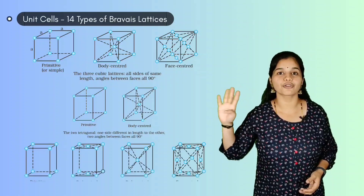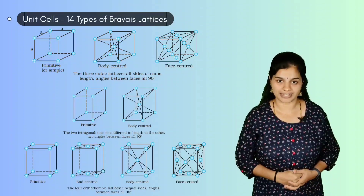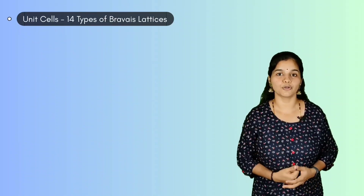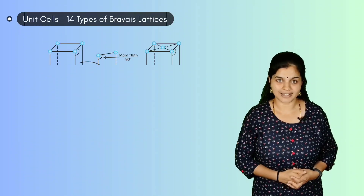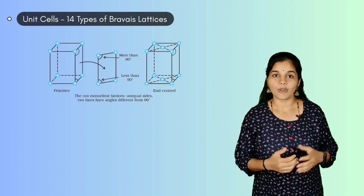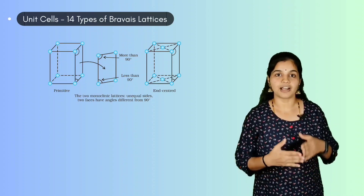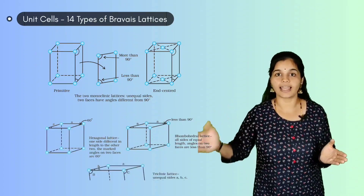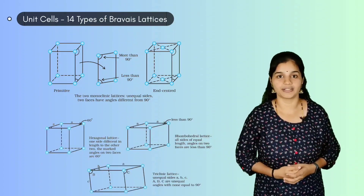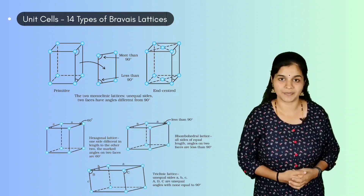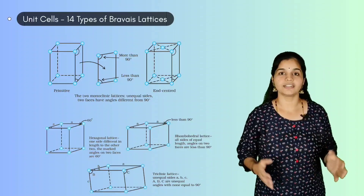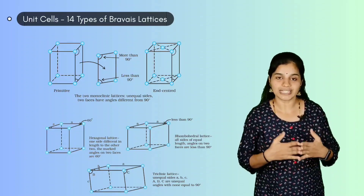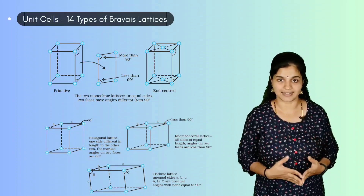There are four orthorhombic lattices and two monoclinic lattices. Along with these, there are triclinic, hexagonal, and rhombohedral lattices. All together, we have 14 different crystal lattices.